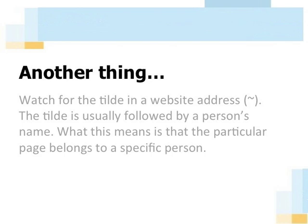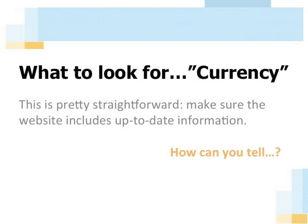Next on our list of criteria is currency. One of the great things about website information is that it can be updated easily and frequently. Think about how often news sites need to be revised. However, that doesn't mean it always happens. Some sites have been kicking around the internet for over a decade without being touched. Depending on the subject matter, that can provide more than a few problems for someone looking for up-to-date information. Therefore, the currency, or how up-to-date a site is, can be very important.